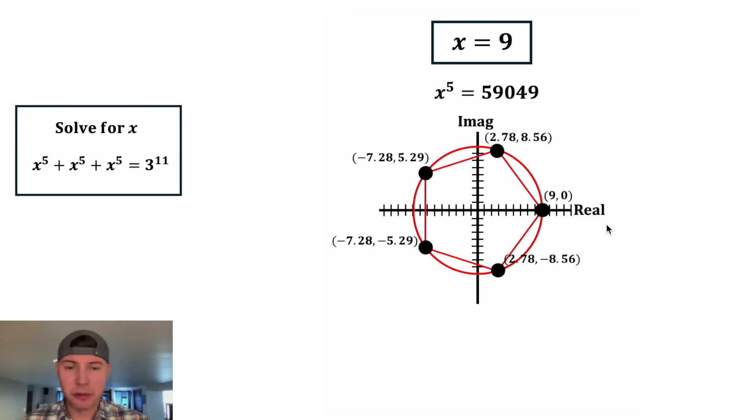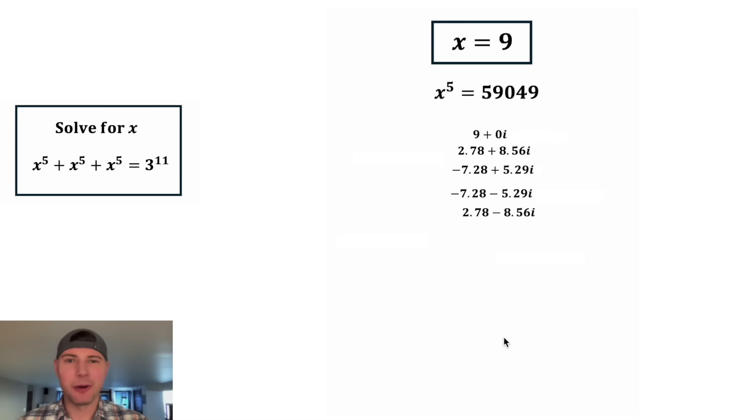And we can plug the rest of these in the calculator and we get these values for x and y. So these are all just points. If we want to write them as numbers, the x is the real portion and the y is the imaginary portion. So this 9 comma 0 would be 9 plus 0i. Or 2.78 comma 8.56 would be 2.78 plus 8.56i. And it's the same thing for the rest of these. The x is the real portion and the y is the imaginary portion. These are the five solutions to our question. These four are really close approximations, but we can get the exact values.